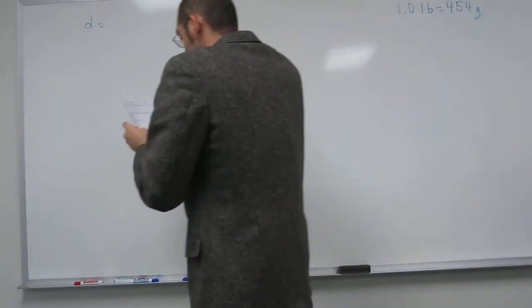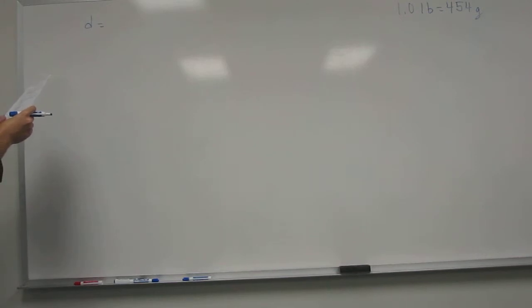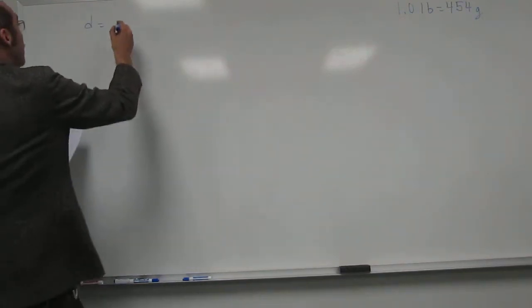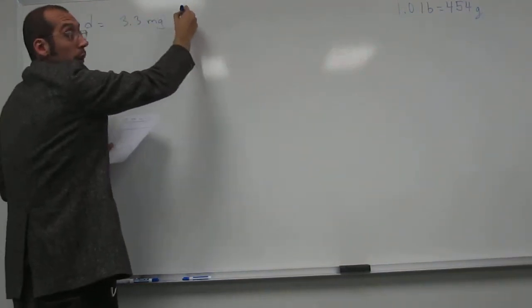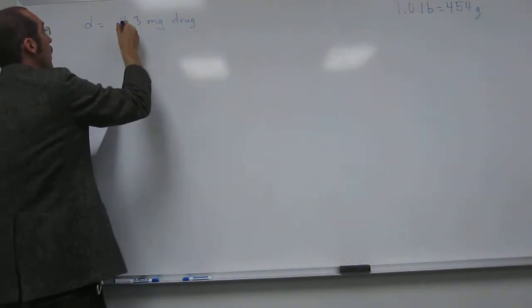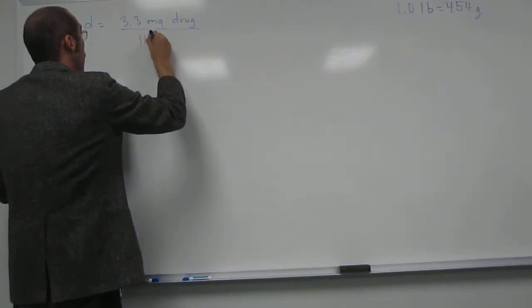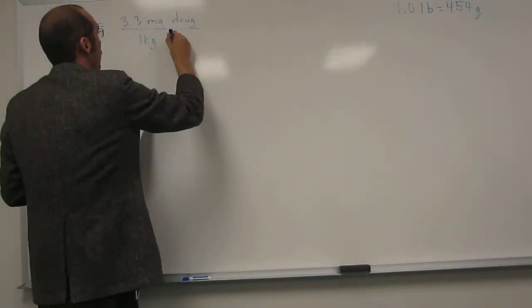And it also says that the normal dosage for azithromycin is 3.3 milligrams per kilogram. So, whenever it says milligrams per kilogram, what it's saying is the dosage is 3.3 milligrams of the drug, in this case azithromycin, per kilogram of patient weight.